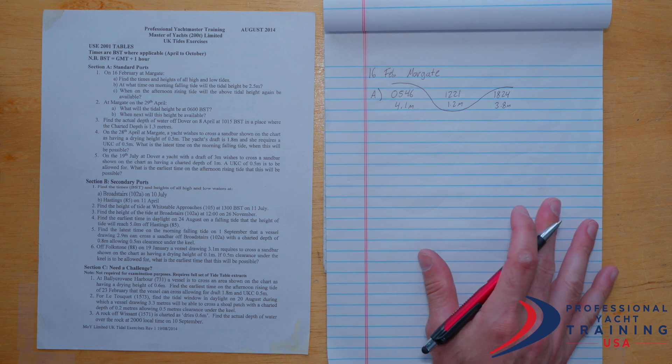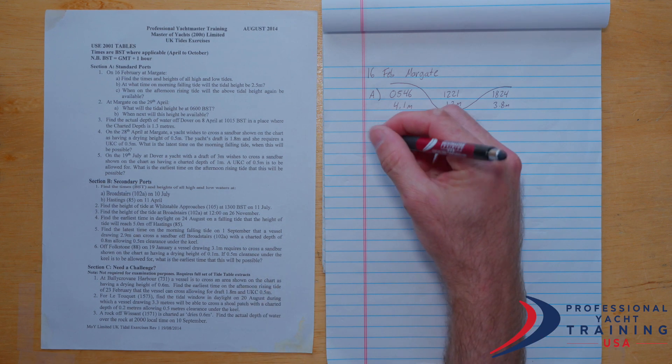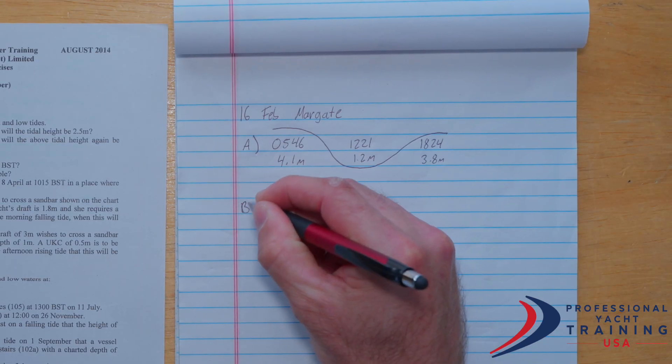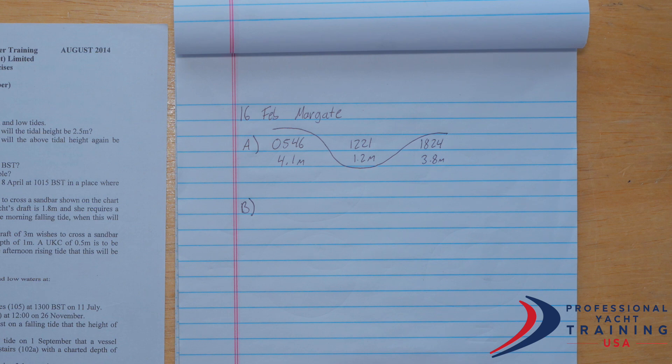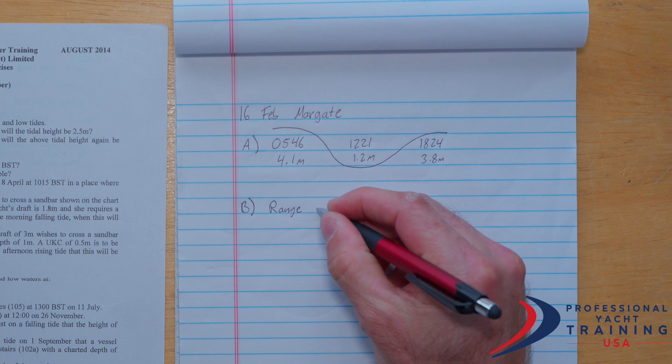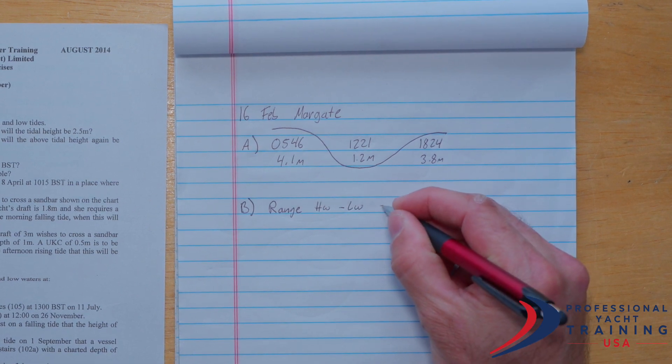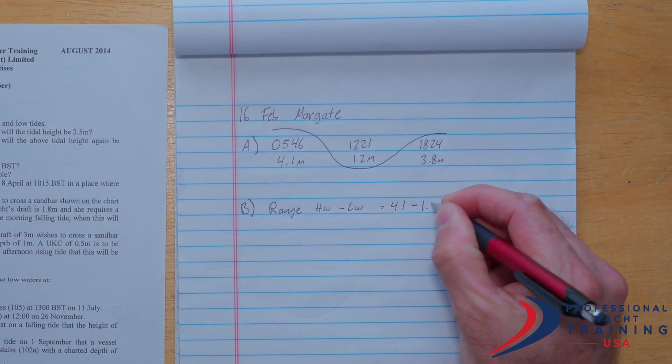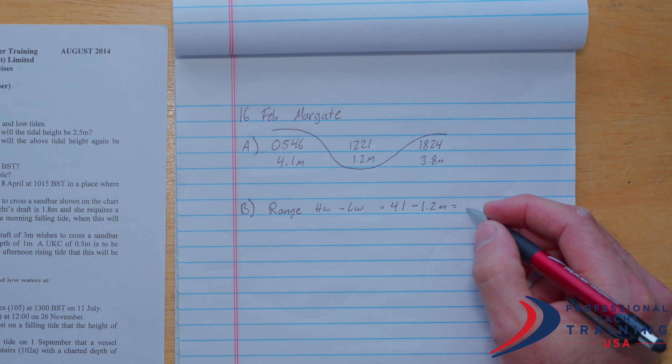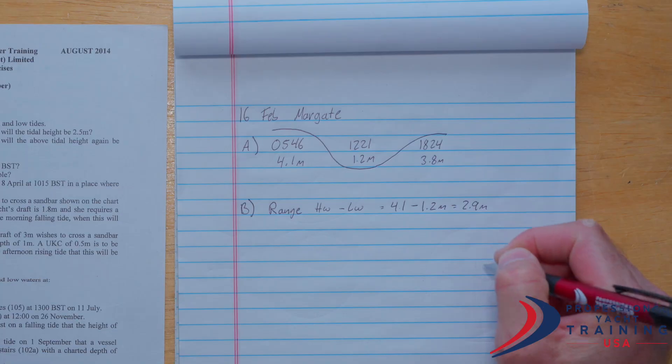So to work that out, we're ultimately going to need a tidal curve. However, I'm going to go ahead and work out the range of the tide first, since that's information that we're going to need later on. So the range of that morning falling tide is going to be the high water minus the low water, or 4.1 minus 1.2 meters. That should work out to 2.9 meters.